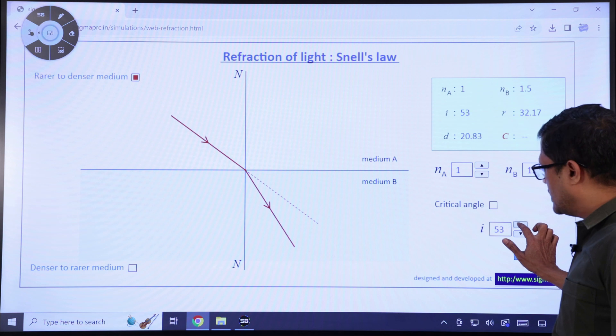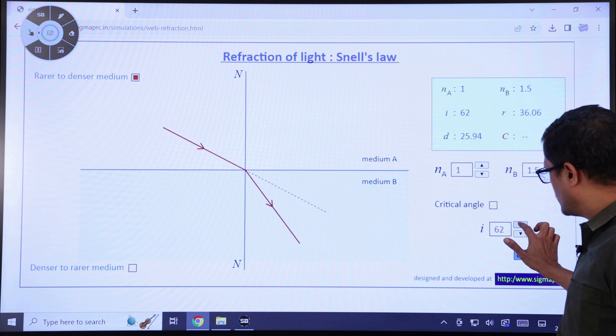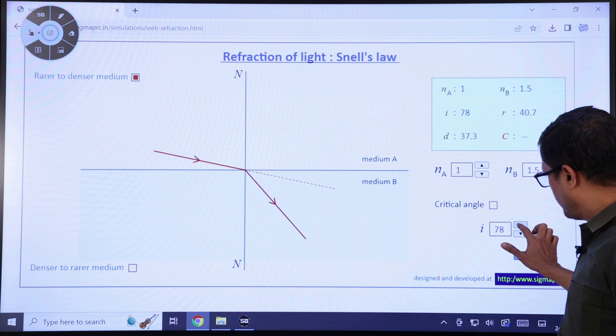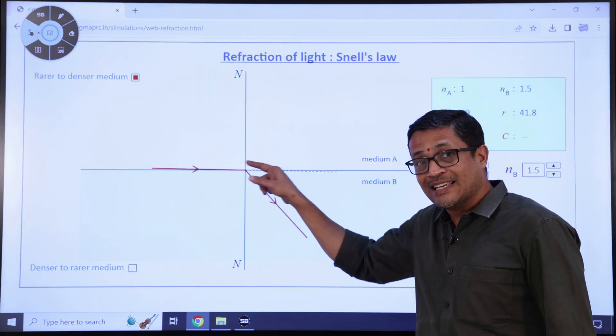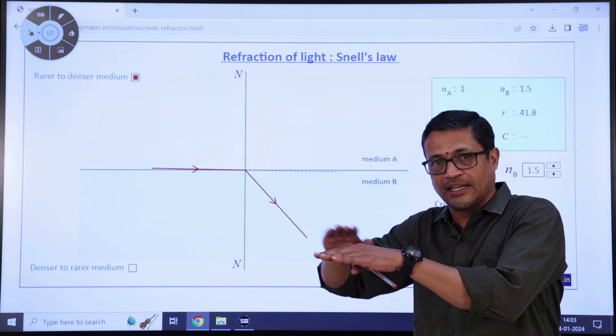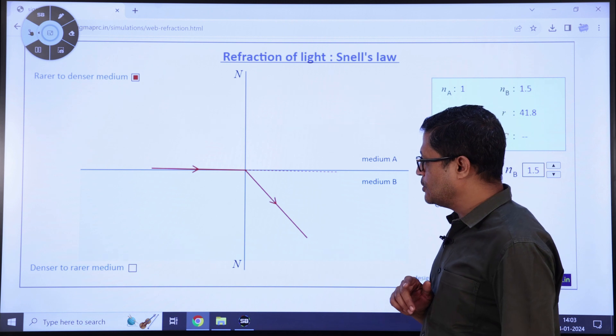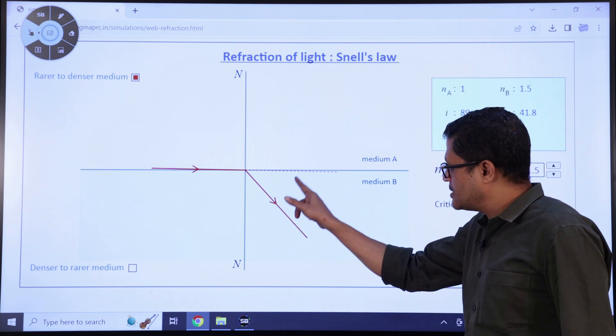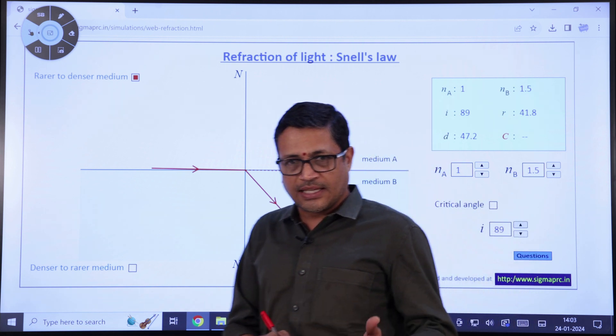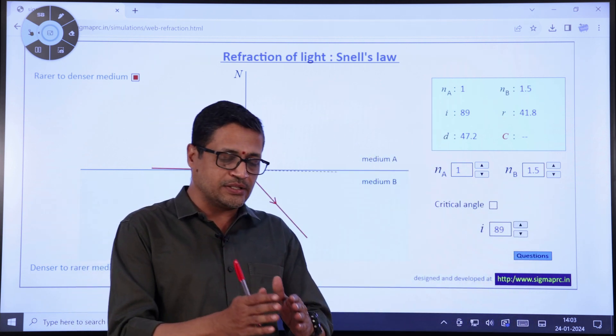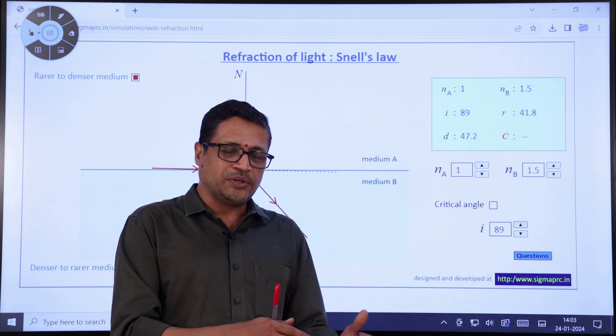As we increase the angle of incidence very close to 90, you see what happens. I will hold it at about 89 degrees. It is almost grazing the interface. We say that the light ray is grazing the interface of the two media, and there is a tremendous amount of refraction. When the light is bending a lot, the next curious question is what happens if I decrease the angle of incidence.